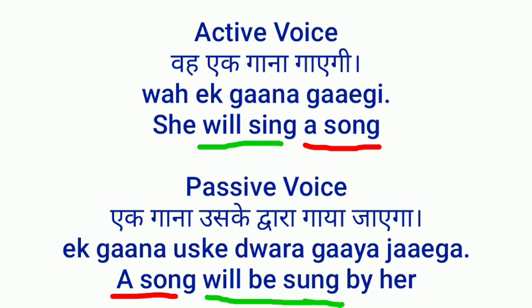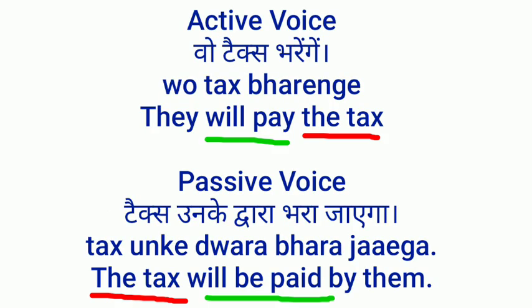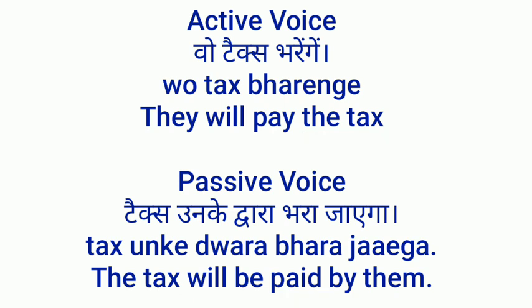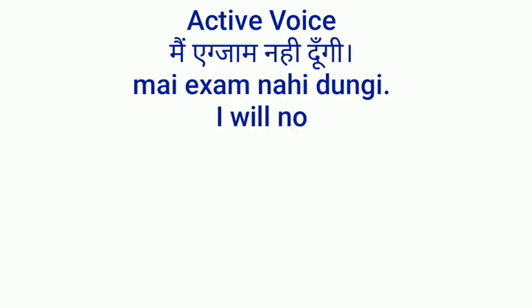'She will sing a song' — passive: 'A song will be sung by her.' Third form of 'sing' is 'sung.' 'They will pay the tax' — 'the tax' is the object so it becomes subject. Passive: 'The tax will be paid by them.' Third form of 'pay' is 'paid.' 'They' becomes 'them.' The 'by them' phrase is optional — include it when the agent is important.